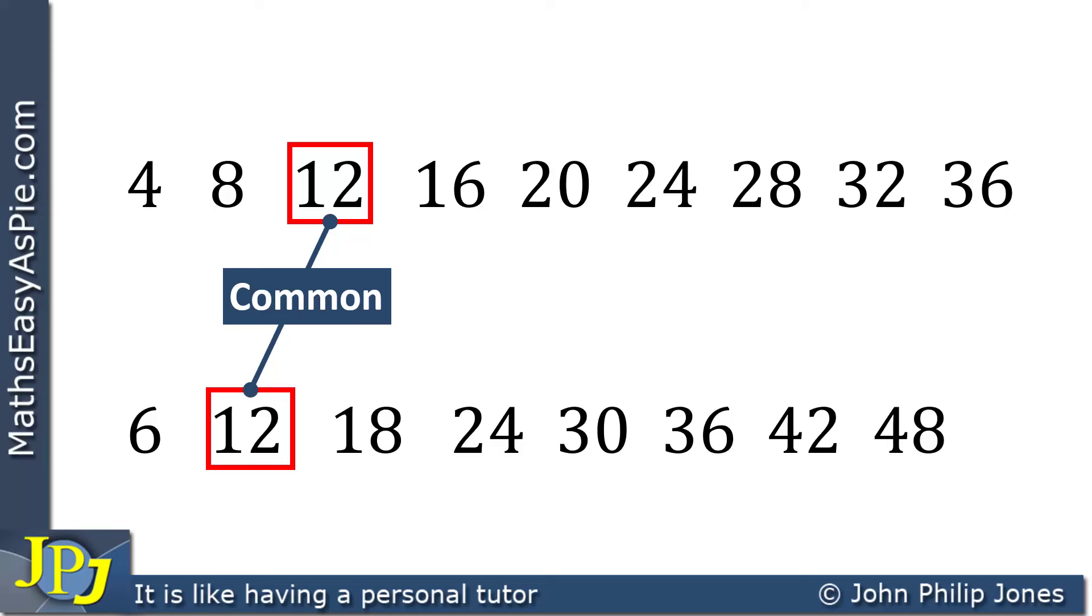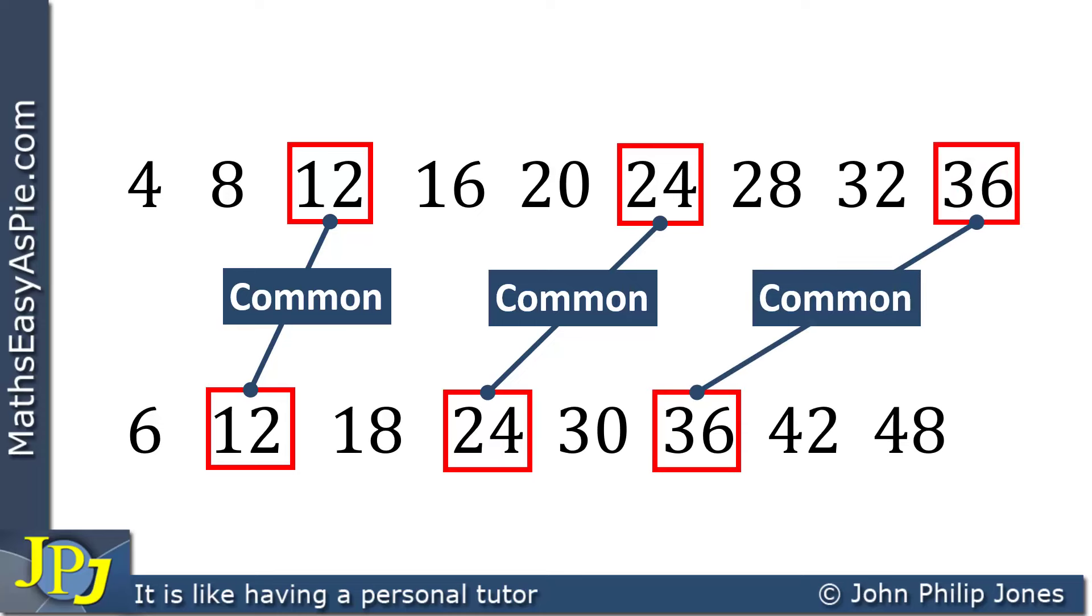Straight away, I can see that this is the lowest common multiple. But to emphasize the point, I'm going to see if there are any other multiples in common. 24 is common to both lists, and 36 is common to both lists.